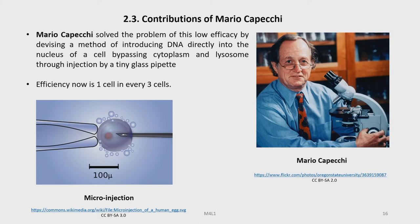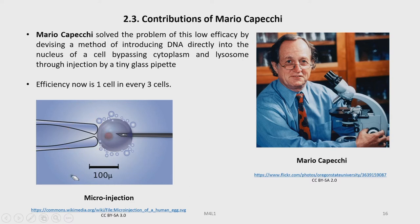Also remarkable are the contributions of Mario Capecchi, who solved the problem of this low efficacy by devising a method of introducing DNA directly into the nucleus of a cell, bypassing the cytoplasm and lysosomes, through injection using a tiny glass pipette. You can see here this tiny glass pipette and the cell being held firmly with the help of suction. Capecchi introduced DNA directly into the nucleus of the cell using these pointed glass pipettes.